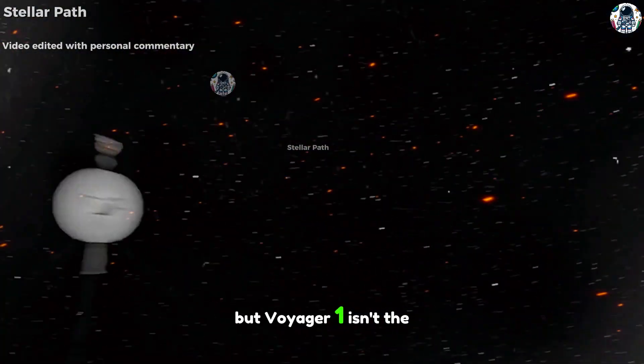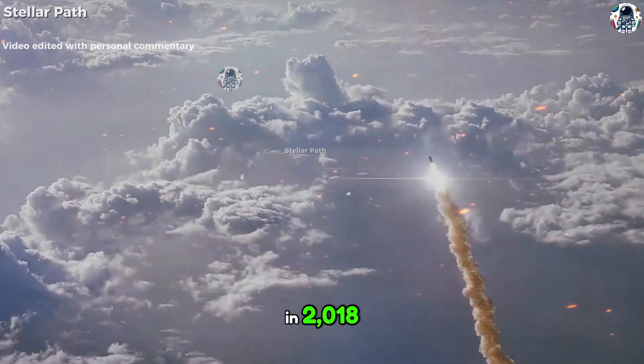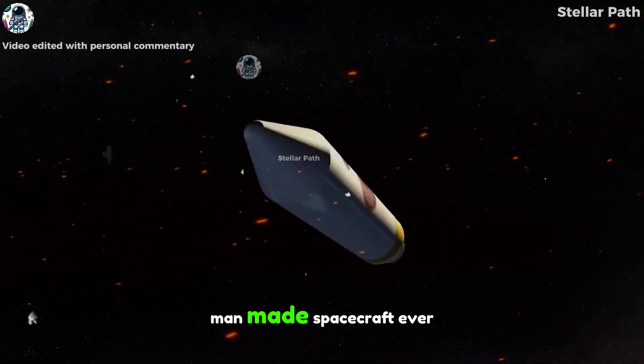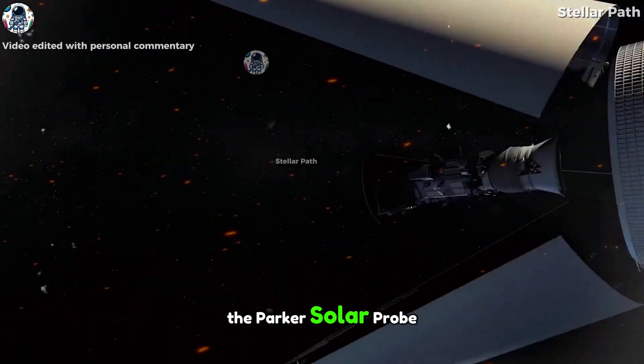But Voyager 1 isn't the fastest. In 2018, the United States launched the fastest man-made spacecraft ever, the Parker Solar Probe.